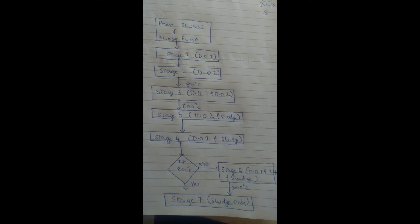The final stage is stage seven. From stage one it goes to stage two, then stage three. As soon as it reaches 80 degrees Celsius, it goes from stage three to stage five. At 600 degrees Celsius, diesel burner number two and the sludge burner fire. If the temperature keeps rising it goes to stage four, then at 800 degrees Celsius it goes to stage seven; otherwise it goes back to stage six with more diesel burners and sludge.